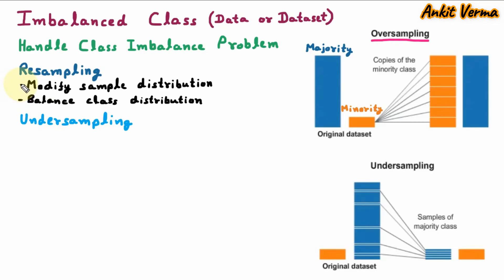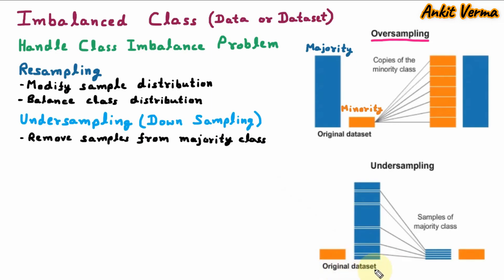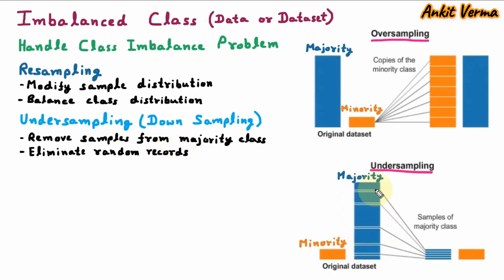The second method under resampling is undersampling, also called downsampling. Undersampling removes samples from the majority class. In the diagram, we have the original dataset where we have less data in minority and more data in majority. From the majority data, a few samples are removed so that it can be reduced and become equivalent to the other class. This is called undersampling — it eliminates random records from the majority data so it becomes equivalent to the minority class.